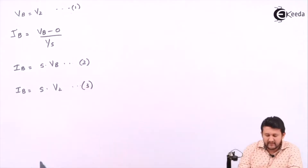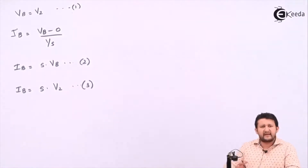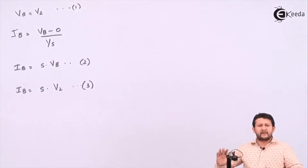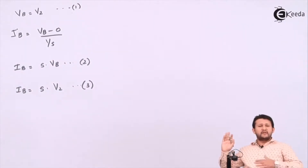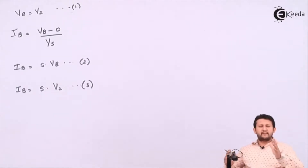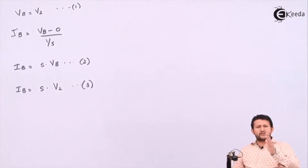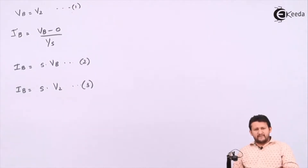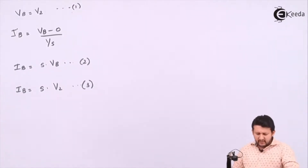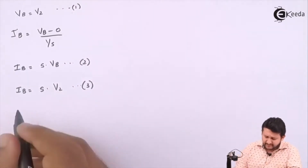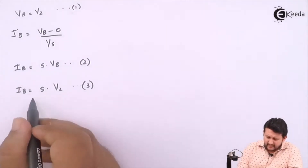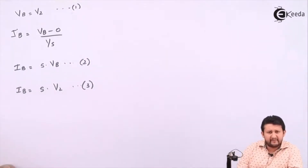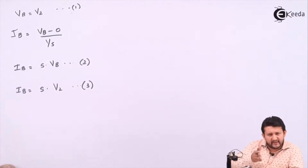That's equation number two. If I replace Vb in terms of V2, I get this equation — that's equation number three. Everything needs to be expressed in terms of V1 and V2, because the question asks me to find the transfer function V2 by V1. You got Ib by solving the vertical path.